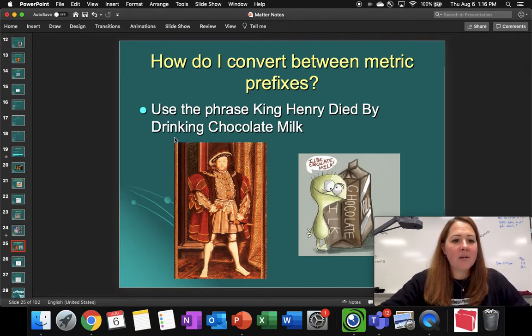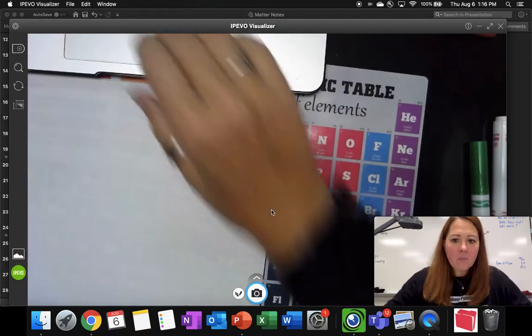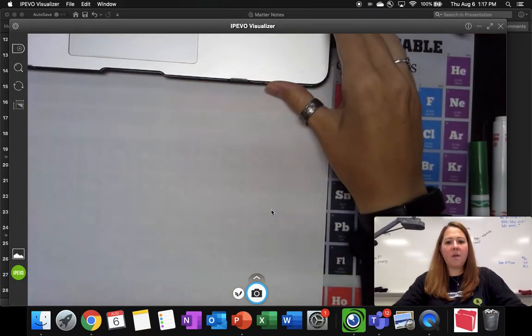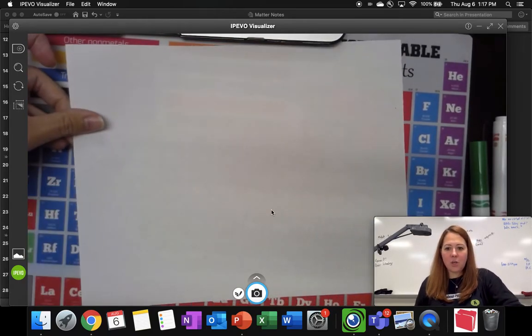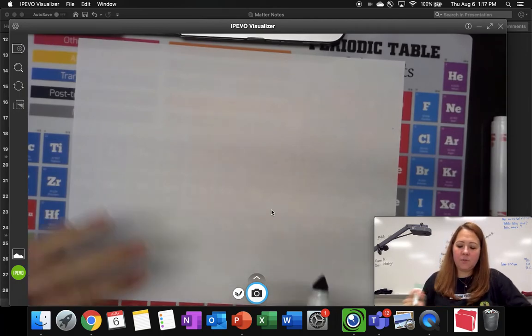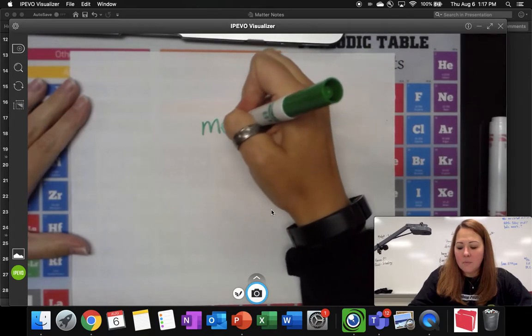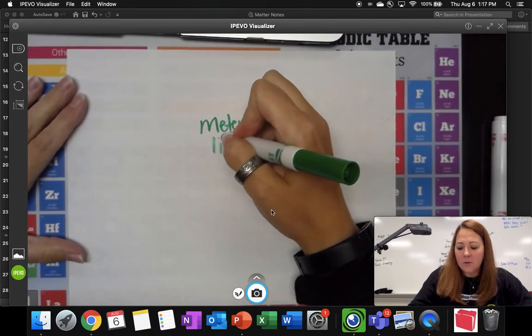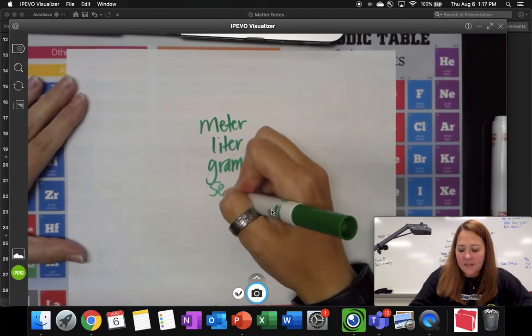With your metric units, I'm actually going to switch over to my document camera at this point. As I switch over to my document camera, we're going to look at some of the metric units. And we're going to look at the base units first. For your base units, we have the meter, we have the liter, we have the gram, and we have the seconds.